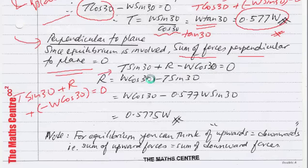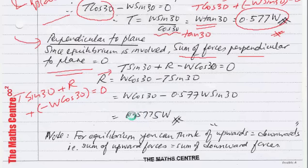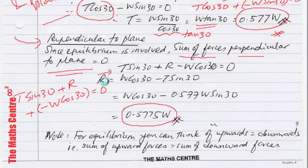Making R the subject, we have R equals W cos 30 minus T sin 30. Using a calculator, you will get R equals 0.5775W. So the normal reaction R equals 0.5775W.